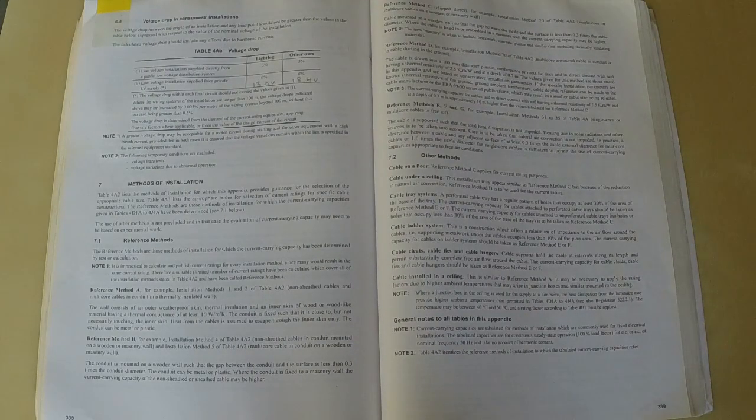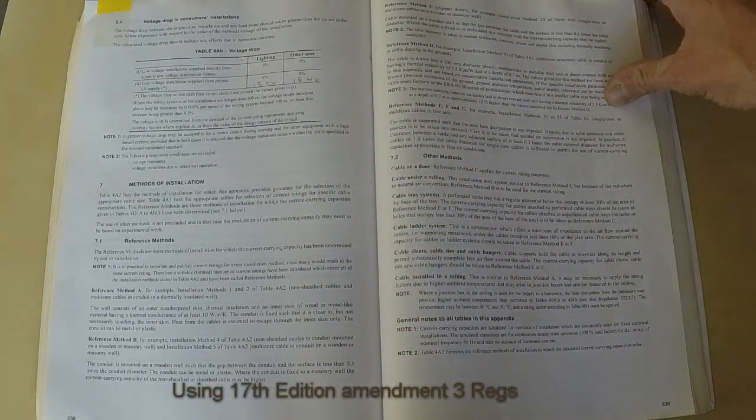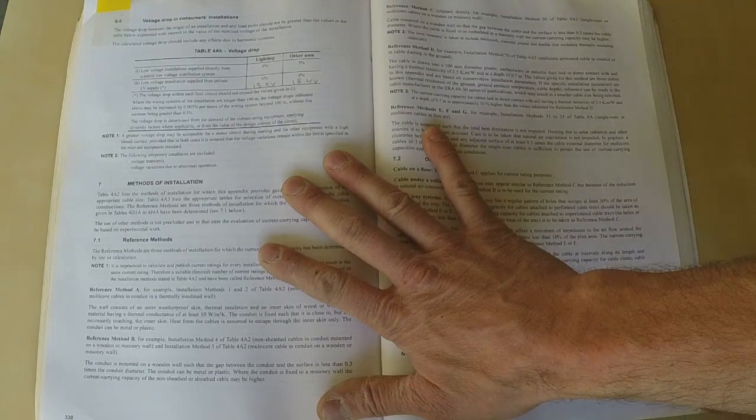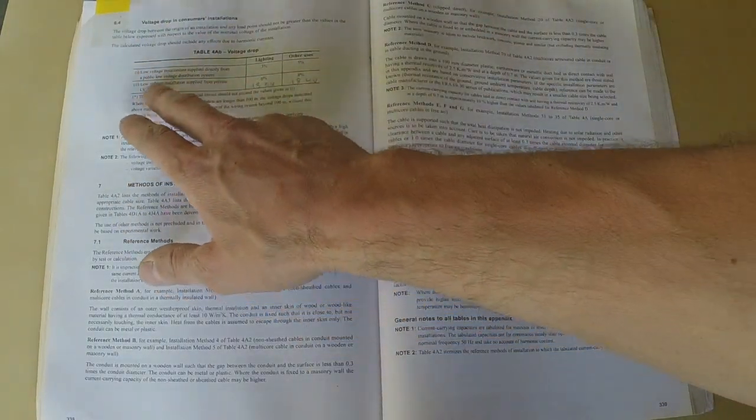Firstly you'll need a regs book and a calculator. Appendix 4 is about volt drop, and in this regs book page 338 shows the voltage drop allowed which in a private supply for lighting is 6%.